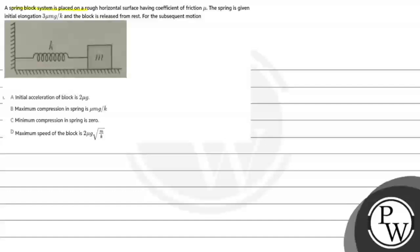Hello, this question says a spring block system is placed on a rough horizontal surface having coefficient of friction mu. The spring is given initial elongation of mu mg by k and the block is released from rest.